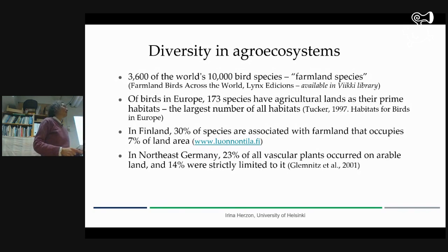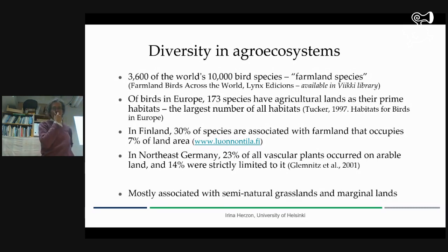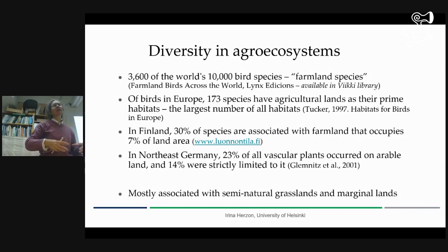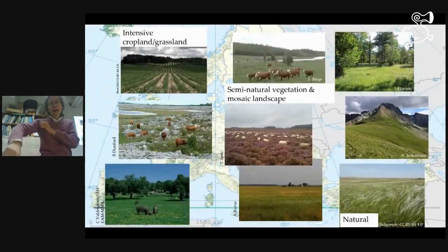Some species are totally dependent on farmland because there's no natural habitat for them to go to. But importantly, most of that biodiversity is associated not just with cereal or potato fields, but with something we call semi-natural grasslands. So it's something that is not tilled regularly, not used very intensively — something fairly marginal. That's where most of our biodiversity is.